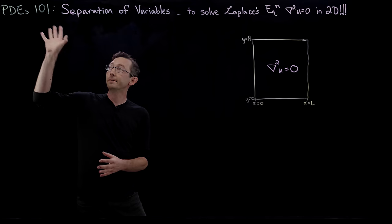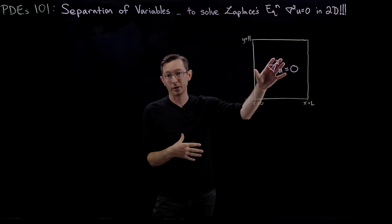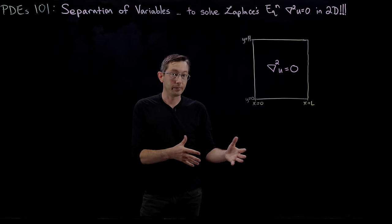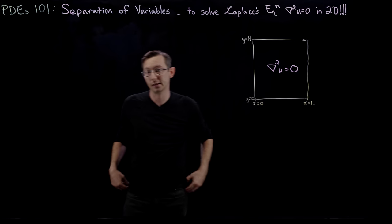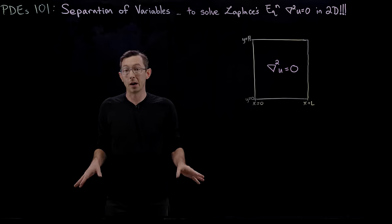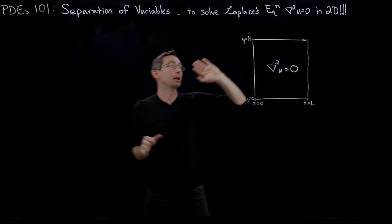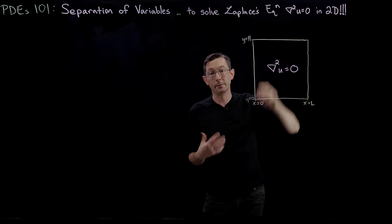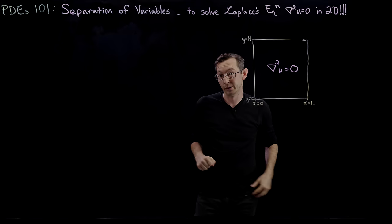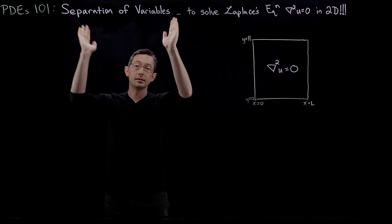Today we're going to talk about one of the most fundamental methods for solving partial differential equations, which is separation of variables. It's a way of turning a partial differential equation, like Laplace's equation, into a system of ordinary differential equations that we know how to solve. Then we can reconstruct the spatial solution of this PDE from those ODE solutions.